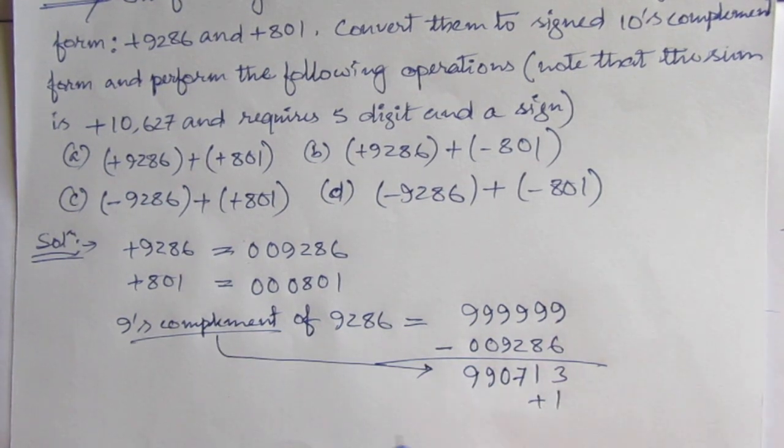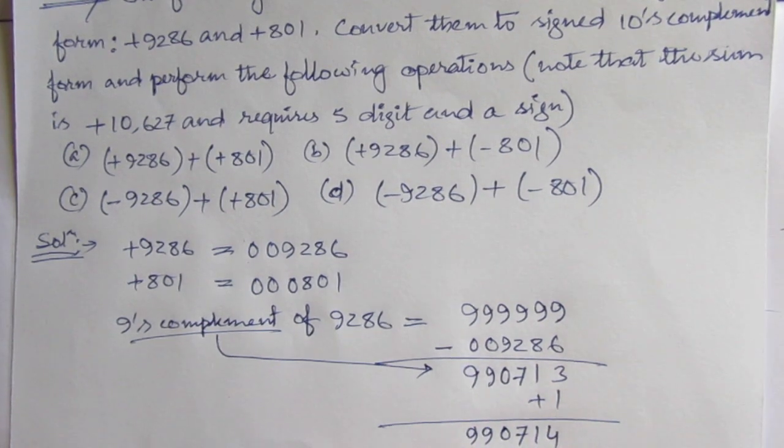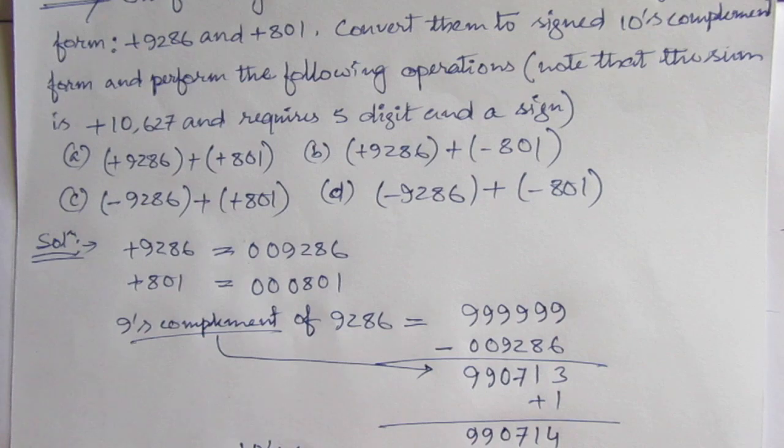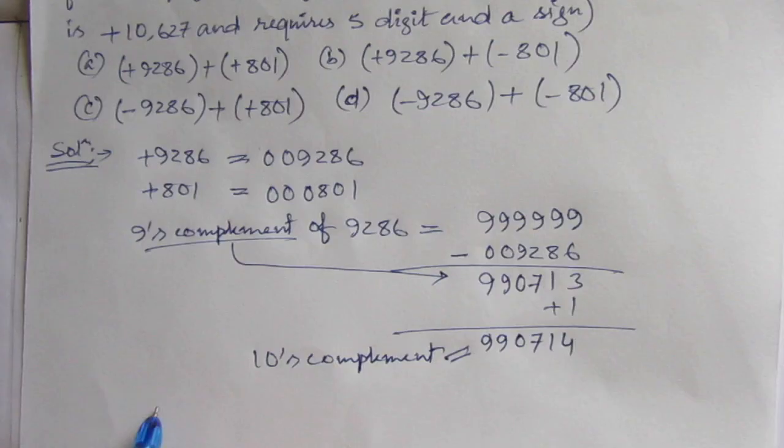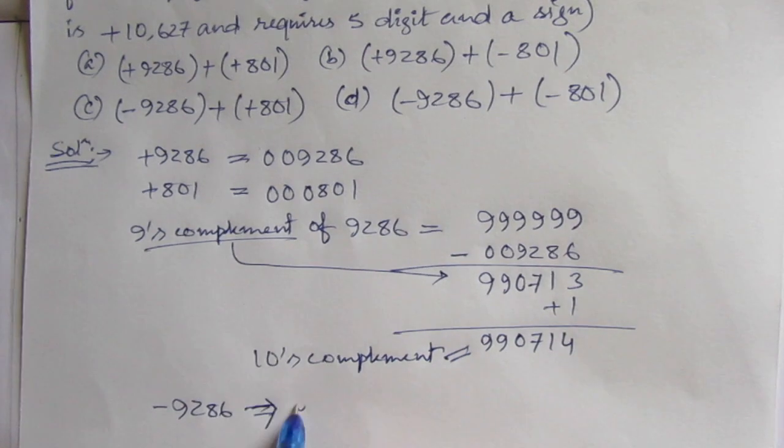Then, we have to add 1 to get the 10's complement. So, it will be 9, 9, 0, 7, 1, 4. And this is the 10's complement. Therefore, minus 9, 2, 8, 6 is equal to 9, 9, 0, 7, 1, 4.